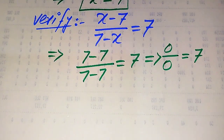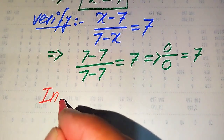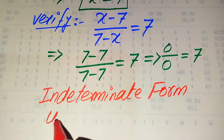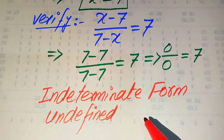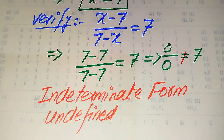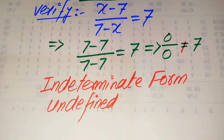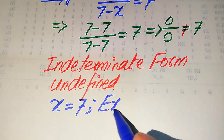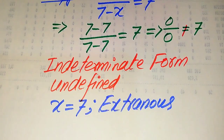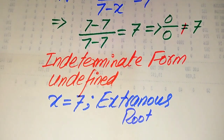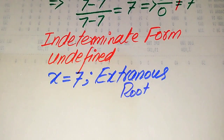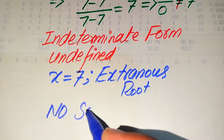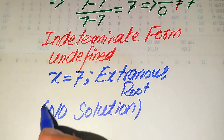The form 0 over 0 is called the indeterminate form, or in other words, undefined. If this is undefined, it means both sides are not equal. Therefore, x equals 7 does not satisfy our given equation. We conclude that x equals 7 is an extraneous root of the given equation. Since we cannot get any other value of x in this method, the question has no solution.